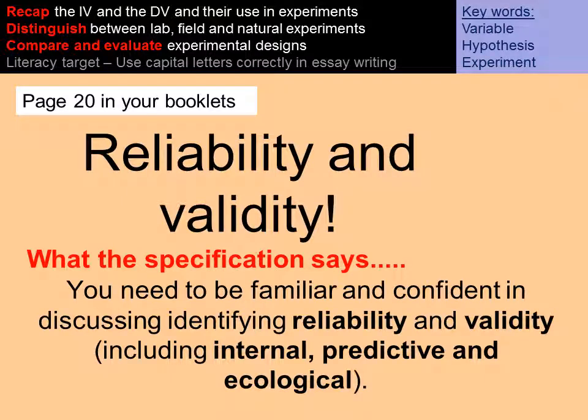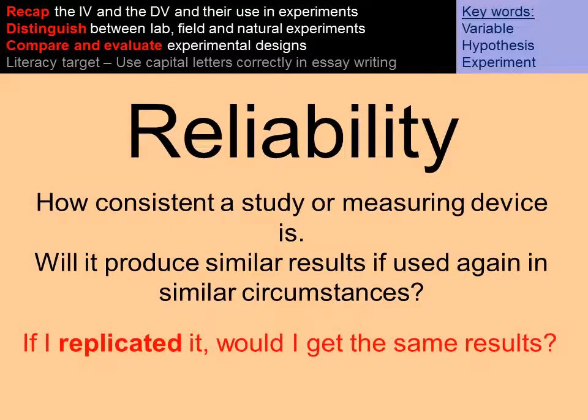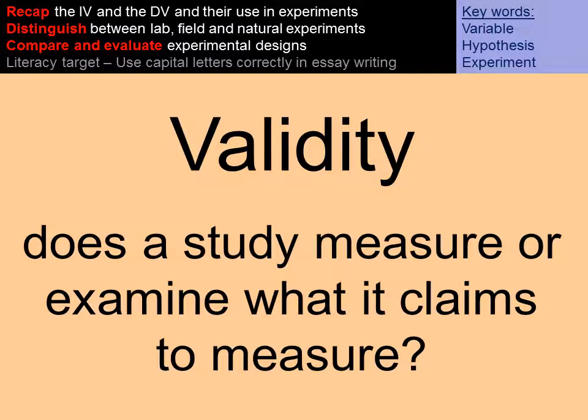The specification says that you need to know not only what reliability and validity are, but you need to be confident in discussing and identifying internal, predictive, and ecological validity. Reliability refers to how consistent a study is or a measuring device is, so if we replicated it would we get the same results in similar circumstances.